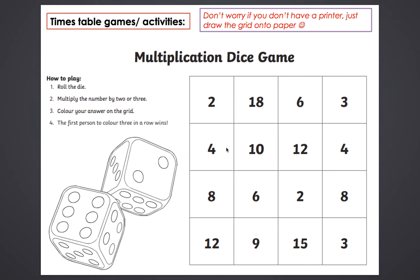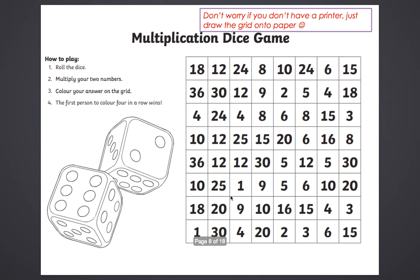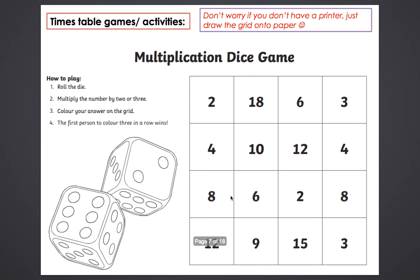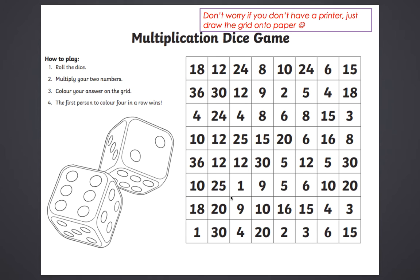The winner is the person who gets three coloured squares in a row. The next game is a little bit harder — if you want something more of a challenge, you roll two dice and times your answers together. So if you rolled a 6 and a 2, you'd do 6 times 2 equals 12 and colour in that square. On this game the first person to colour four in a row wins.